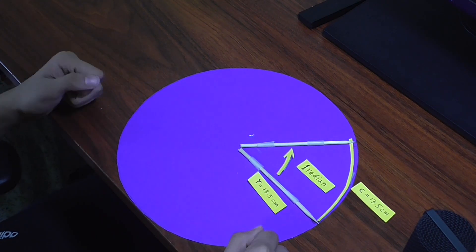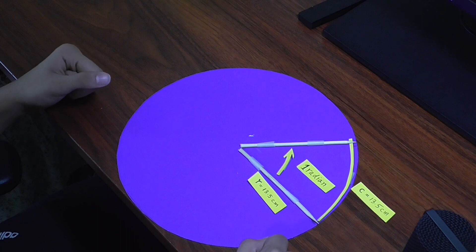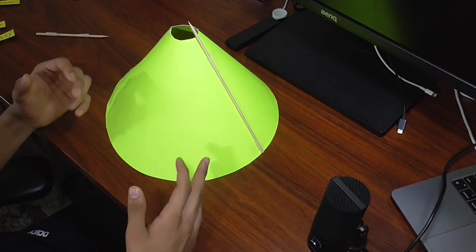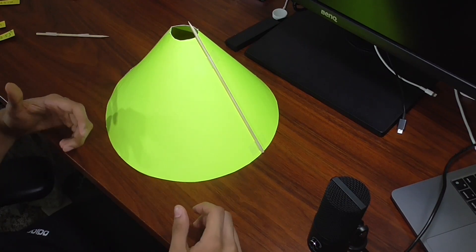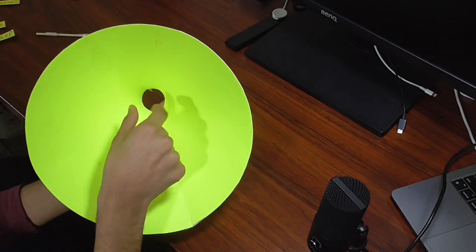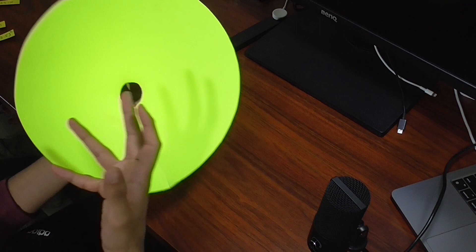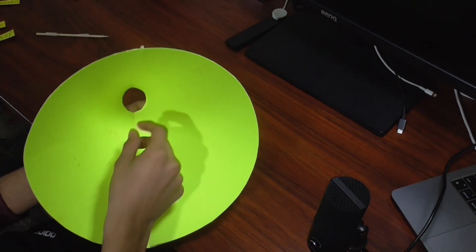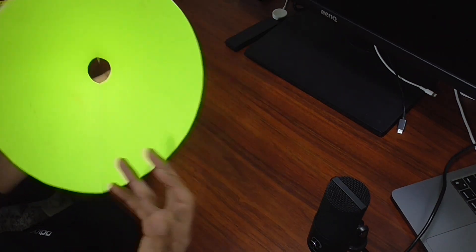So now let's see this concept in three-dimensional space. Here is the model of a solid angle. Just like the unit for two-dimensional spread is radians, the unit for spread in three-dimensional space is called a radian. So how much spread is in one radian? Let's find out.